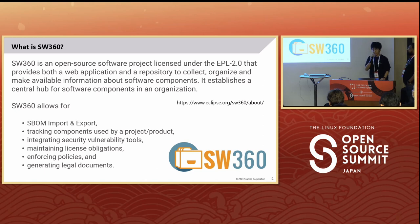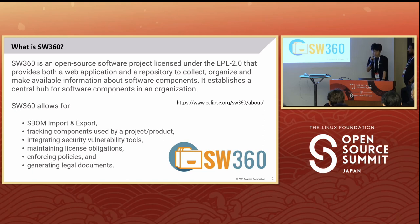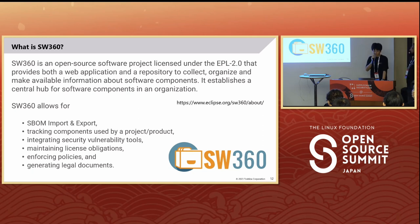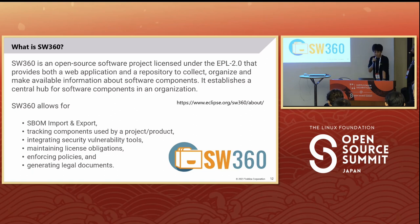What is SW360? SW360 is an open-source software by the Eclipse Foundation, licensed under the EPL2 license. It provides both a web application and a repository to collect, organize, and make available information about software components. SW360 serves as a central hub for software components in organizations. It allows for SBOM import, export, and tracking components used by a project or product, integrates security vulnerability tools such as VulnerableCode, implements license obligations, enforces policies, and generates legal documentation.